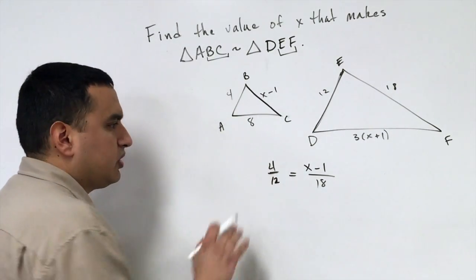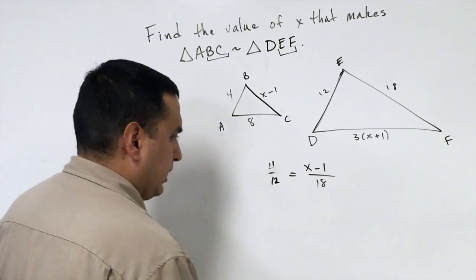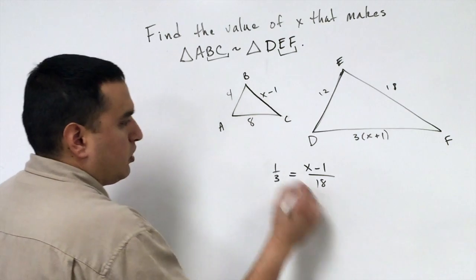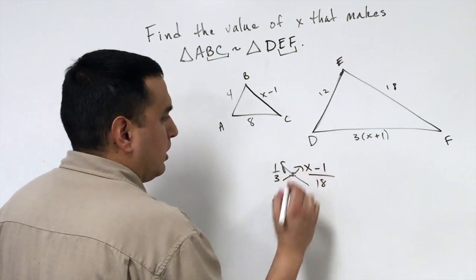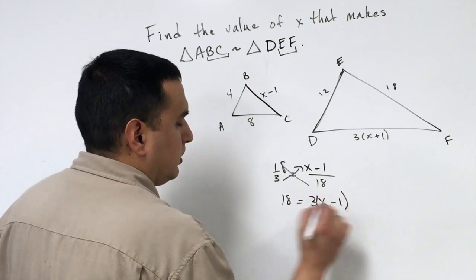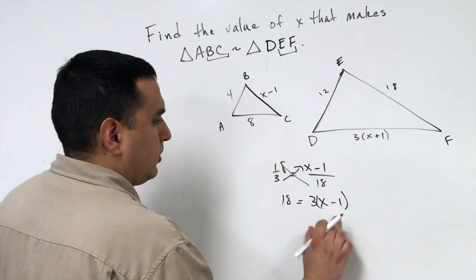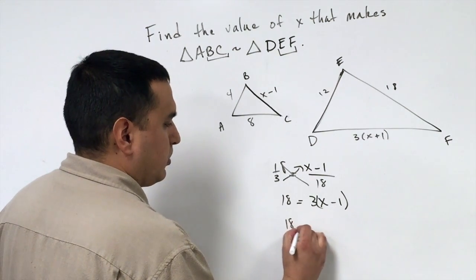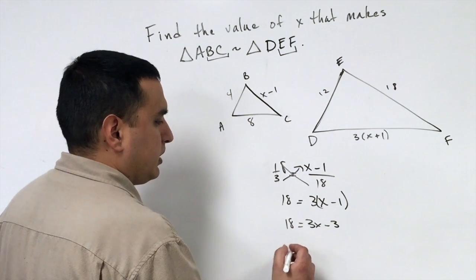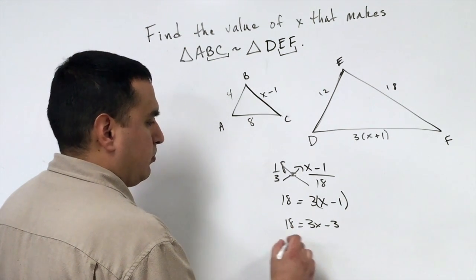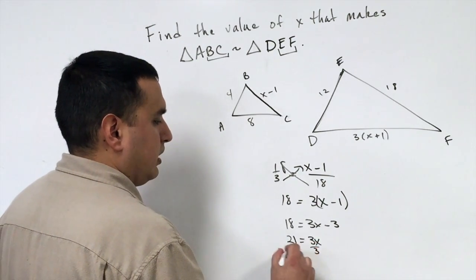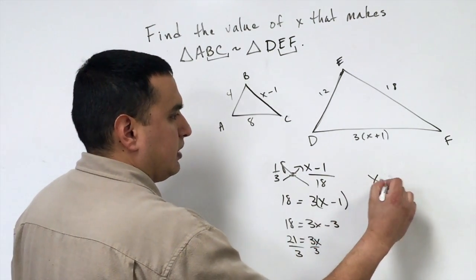What I would suggest, remember that if you can reduce, reduce. It just makes the multiplying easier. So this 4 over 12 is going to reduce to one-third. Cross-multiply gives you that 18 is equal to 3 times x minus 1. I need to distribute. That's going to be 3x minus 3. Add 3 to both sides gives me 21. If I divide by 3, I get x is 7.